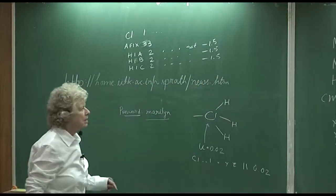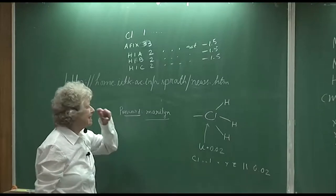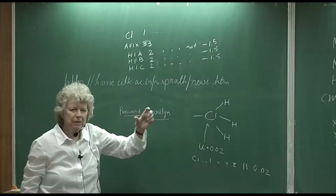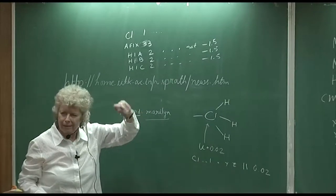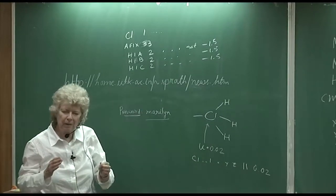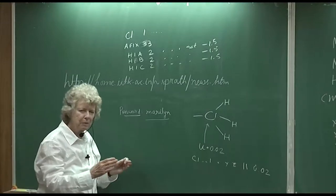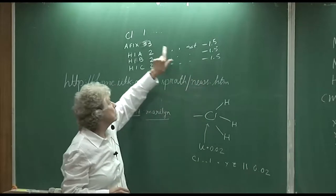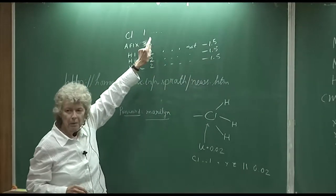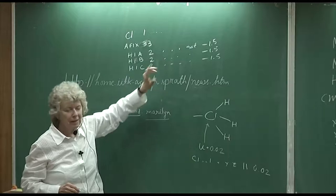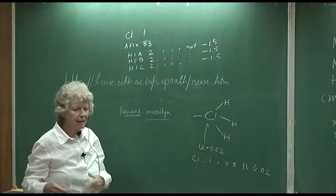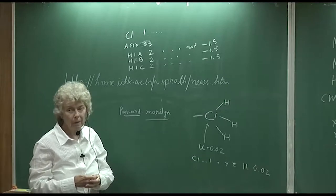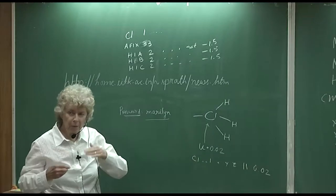This actually doesn't use any extra parameters, because these are just computed and set as a rigid bond attached to the carbon — however the carbon moves, the hydrogen moves with it. It's called riding. These are also tied to whatever the thermal parameter was for the carbon, so it doesn't add any extra parameters. We want to keep the number of parameters low to get a good data-to-parameter ratio.